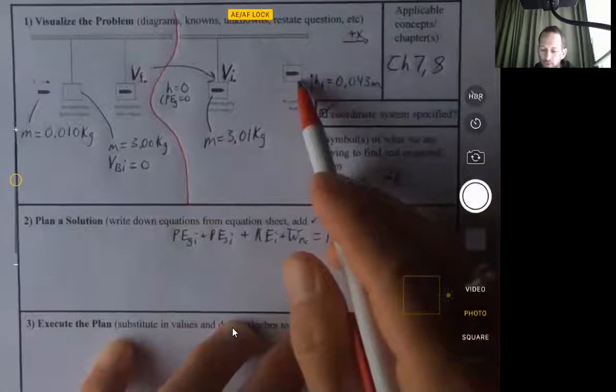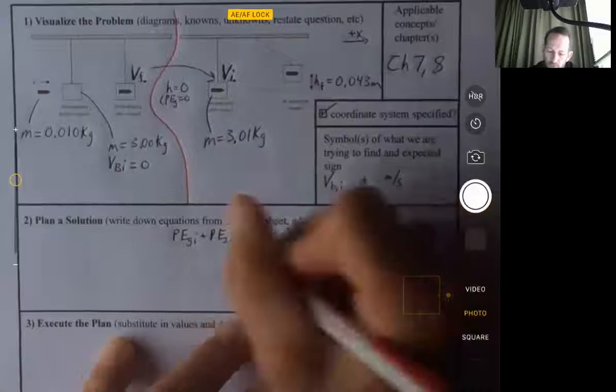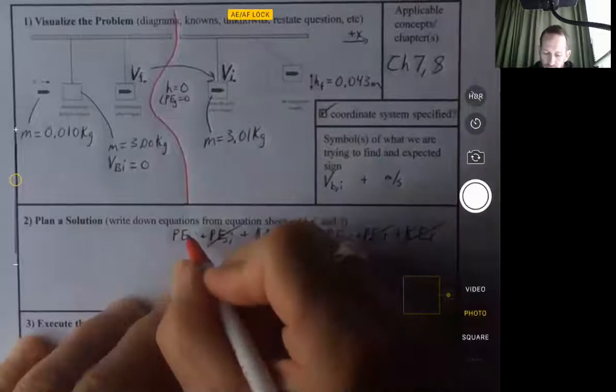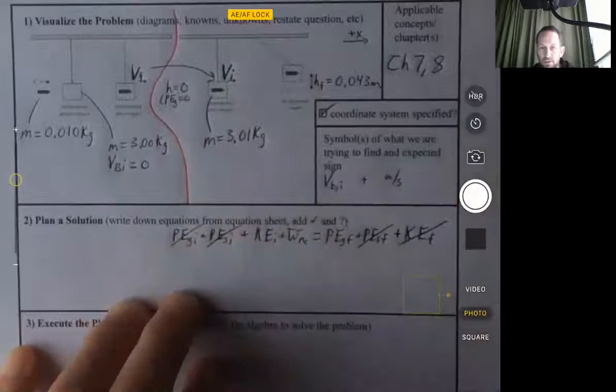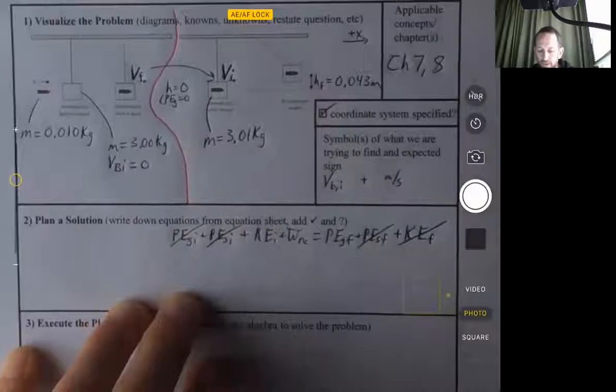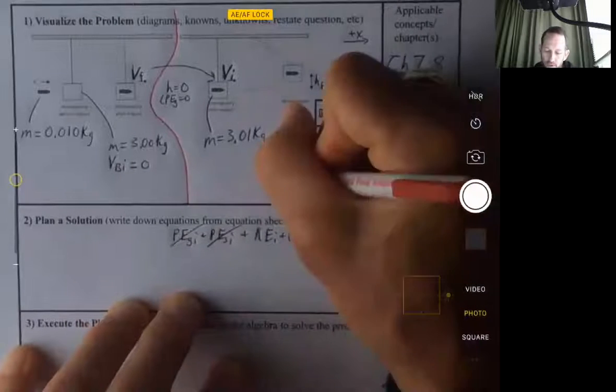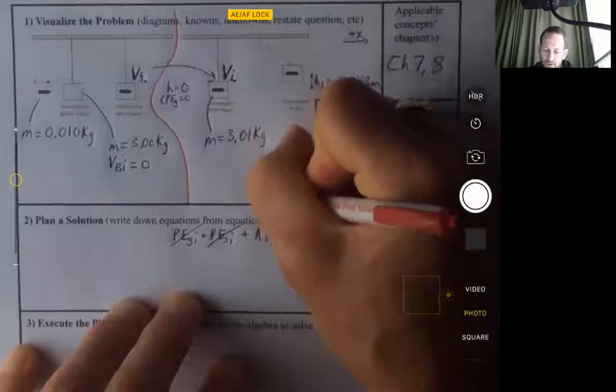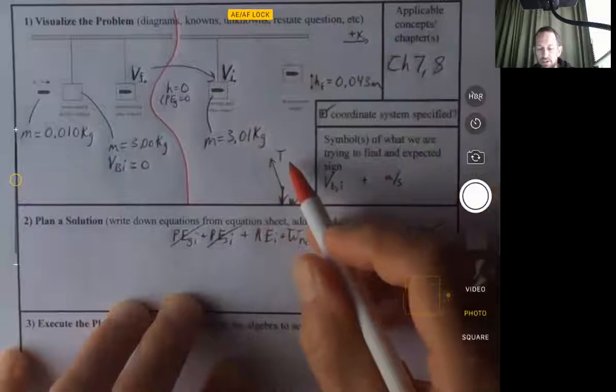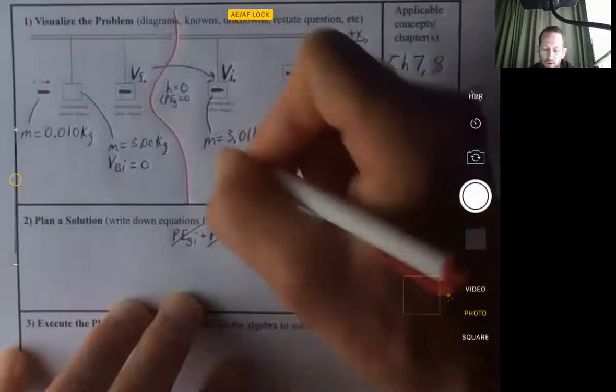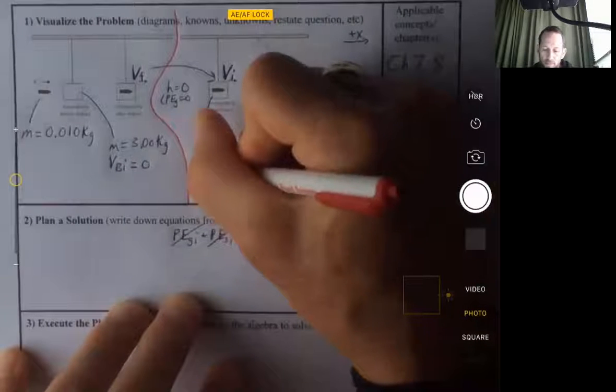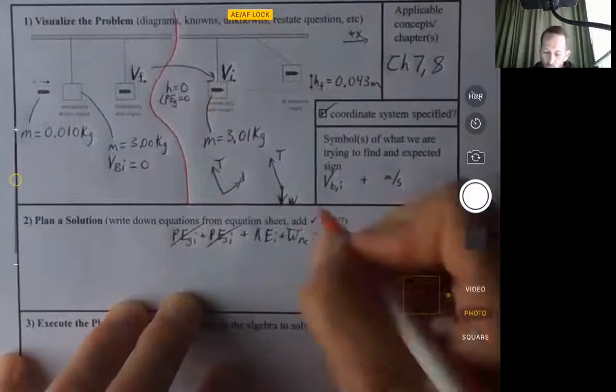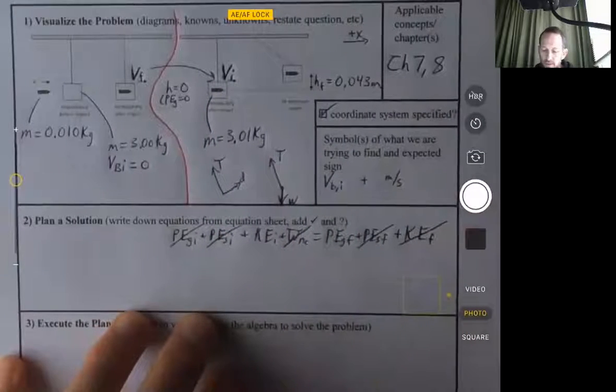When it swings to its highest point, it is not moving. There's no springs involved, so we can get rid of both of those. When it starts out, it is at the height where the gravitational potential energy is zero. And as far as work, there's tension acting and there's weight. Tension is a non-conservative force. However, the tension is always perpendicular to the displacement for a pendulum, so the work by non-conservative forces is zero.